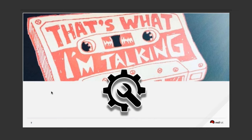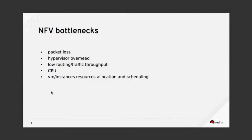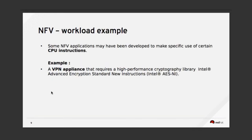What I'm talking about exactly, as I said at the beginning, is how to tune NFV based on bottlenecks. Usually the bottlenecks we see from NFV are: packet loss, hypervisor overhead impacting your workload, low traffic throughput, problems with CPU load average, and resource allocation issues when talking about the network.